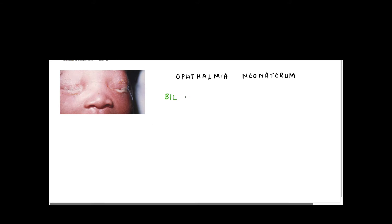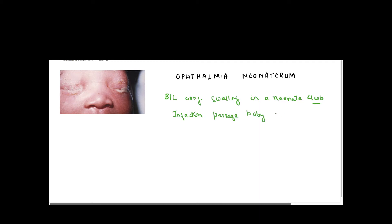What is Ophthalmia Neonatorum? By definition, it is a bilateral conjunctival swelling in a neonate within the first four weeks of life. Remember — within the first four weeks of life. The infection is most likely due to the passage of the baby through the birth canal.